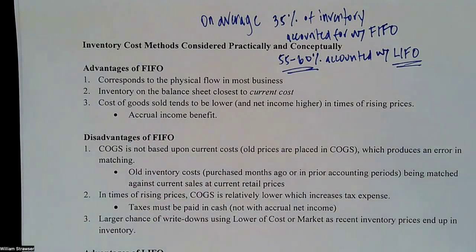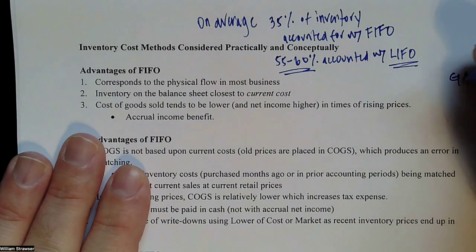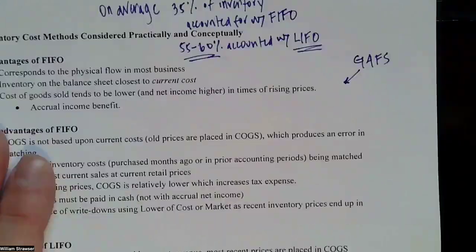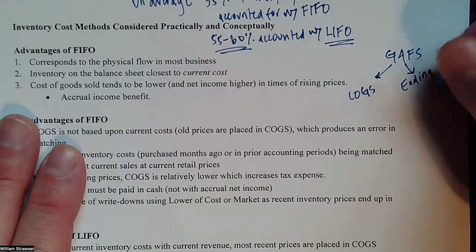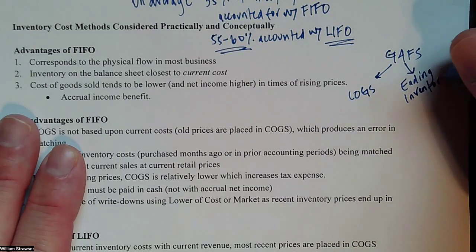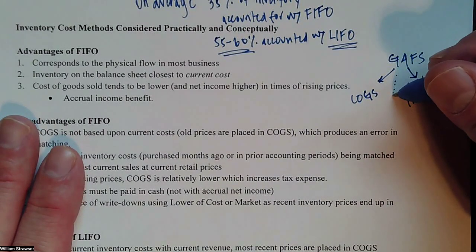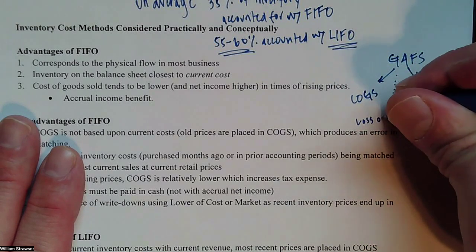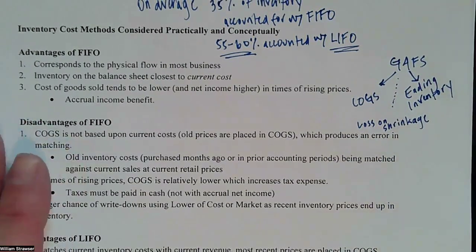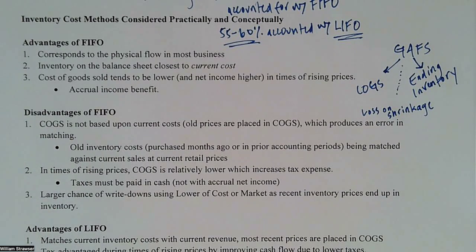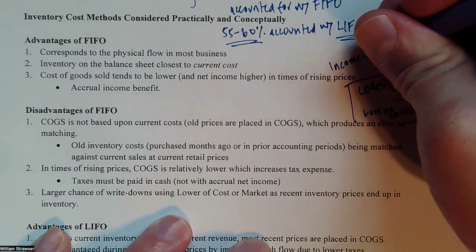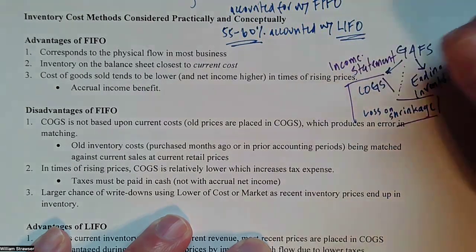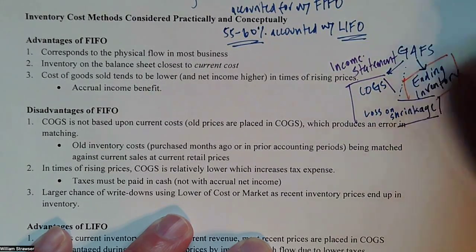When we consider where these costs go — our cost flow assumptions really are just taking the goods available for sale and saying, according to the cost flow assumption, this is cost of goods sold, therefore the rest is my ending inventory. The goods available for sale fall into those two buckets, plus a tiny bit coming out to loss on shrinkage. Cost of goods sold and loss on shrinkage go to the income statement, while the ending inventory balance is seen on the balance sheet.